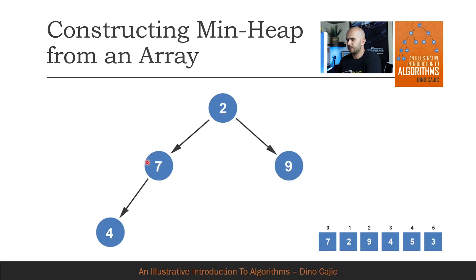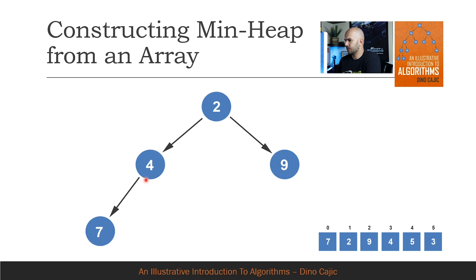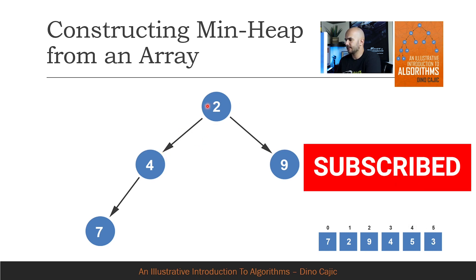Going through the array, we see that the next element is 4, so 4 is added. Since 4 is smaller than 7, the two nodes are swapped. Element 4 is then checked with element 2 to make sure that it's not smaller. Since it's not, the elements remain in their current positions.